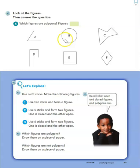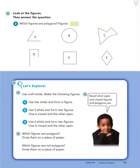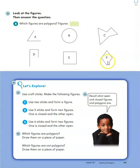Shape B is closed, but it's not made up of line segments — so this circle is not a polygon. Shape C looks like it's closed, there's nowhere for the mouse to run in, and it's made up of line segments, so shape C is a polygon. Shape D is open, so it's not a polygon. Shape E is a square — it is closed and made up of line segments, so it's a polygon. Shape F is a rhombus made up of line segments, so it's definitely a polygon.